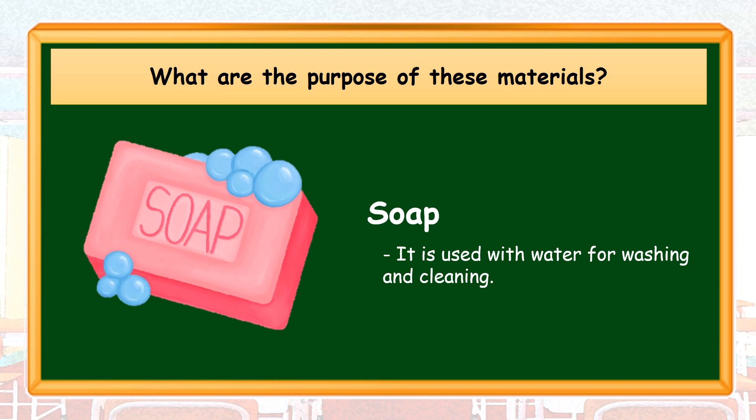Soap. It is used with water for washing and cleaning. Soap is an example of a personal body care product. It is a substance made of a compound of natural oils or fats with sodium hydroxide or another strong alkali. Scents and coloring are added to make it more attractive to customers. Soap is also used to clean our hands and body. What is your favorite brand of soap?